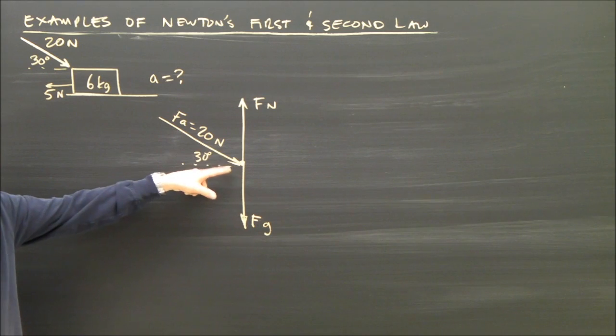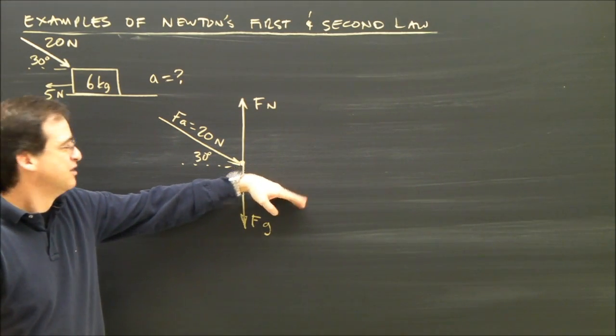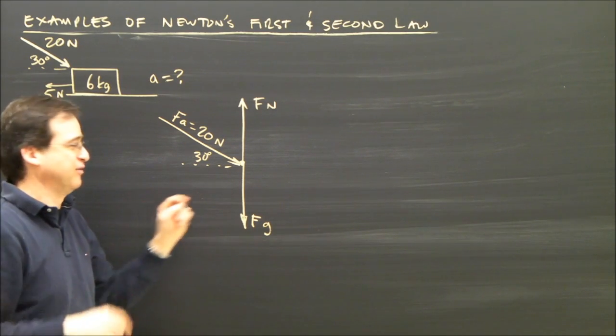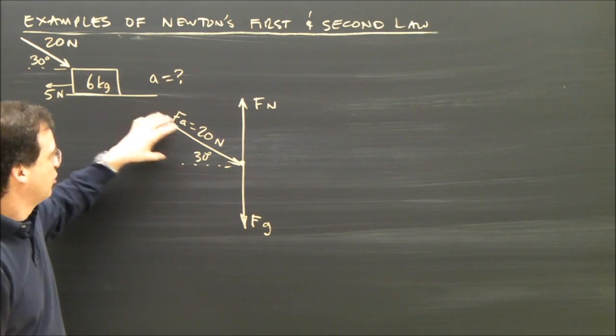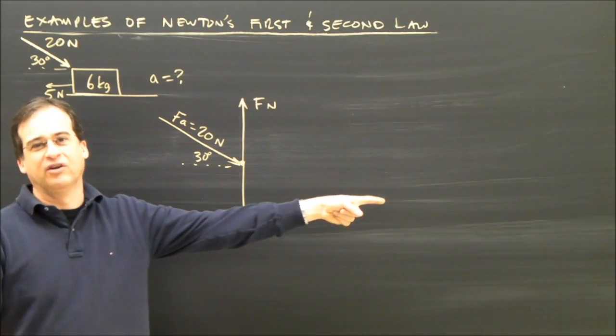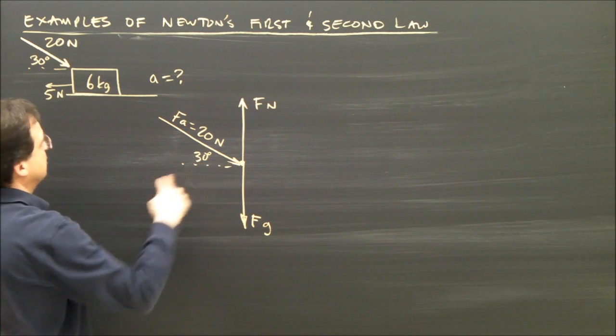Some people would like to draw this force from this dot out at an angle of 30 degrees because they'd like all their forces to go out of that dot for our free body diagram. But for me, it doesn't matter. You can draw it into the dot or out of the dot. Now I'm going to have to split this up into components, so I want to leave some space.